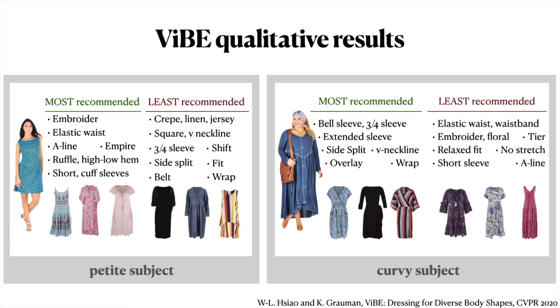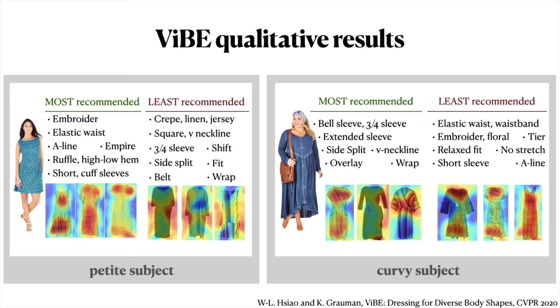For the curvy subject, the system recommends extended sleeves, V-neckline, and wrap skirts to create a more extended silhouette and accentuate her natural curves. The heat maps on the garments show the localized regions the model attends to when making predictions and validate the correspondence to the attributes.